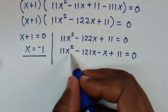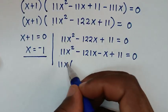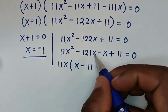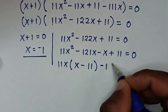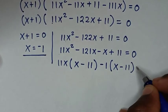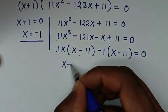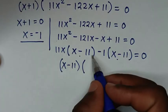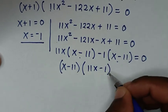From the first two terms, 11x is common: 11x times (x minus 11). From the last two terms, we factor out negative 1: negative 1 times (x minus 11). So (x minus 11) is common, giving (x minus 11) times (11x minus 1) equals 0.